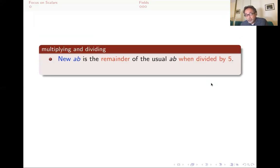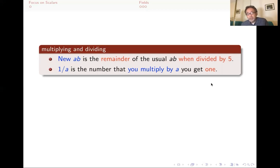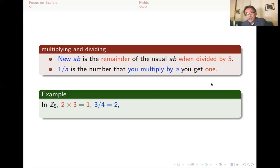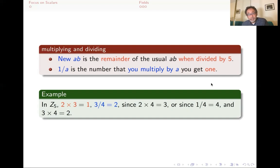For multiplication and division: the new A times B is the remainder of the usual A times B when divided by 5. To define division, you first decide what 1 over A is: it's a number that if you multiply by A, you get 1. For example, in Z5, 2 times 3 — the usual product is 6, but the remainder when divided by 5 is 1, so 1 over 2 is 3. And 3 fourths is 2, because 2 times 4 is 8 and the remainder when divided by 5 is 3 — so 2 times 4 equals 3, meaning 3 fourths is 2. Or you could say 3 fourths is 3 times 1 fourth, and 1 fourth is 4 because 4 times 4 is 16 and the remainder is 1, so 3 times 4 is 2.